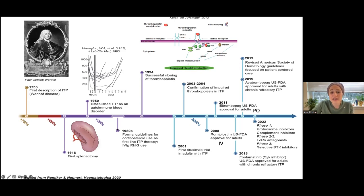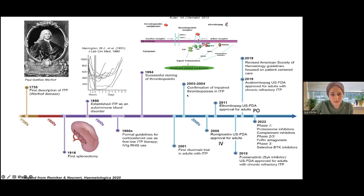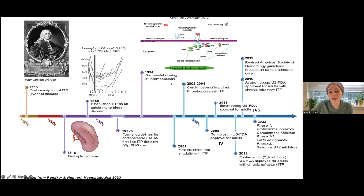In the 1980s, the first guidelines for steroid use in ITP were published — you could use steroids or IVIG, reasoning that since it works for all autoimmune diseases, try it for anything autoimmune. Not until 2001 was rituximab trialed in ITP and found to work. Rituximab came with significant side effects but added to improving patient quality of life.